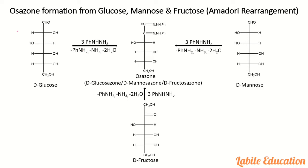Hello everyone. Today we will discuss osazone formation from glucose, mannose, and fructose, and we will discuss the Amadori rearrangement. Glucose when treated with excess phenylhydrazine gives glucosazone, mannose treated with excess phenylhydrazine gives mannosazone, and fructose treated with excess phenylhydrazine also gives the same osazone — all three give the same osazone.